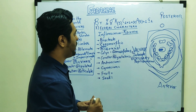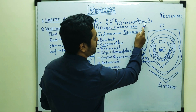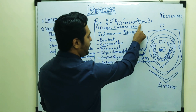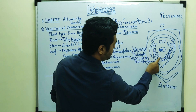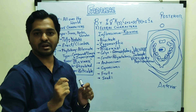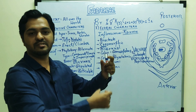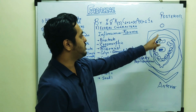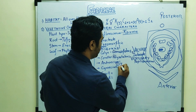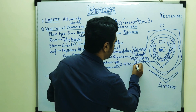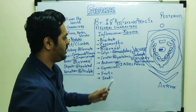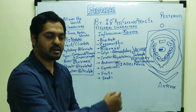Looking at the androecium, the arrangement is 9 + 1, meaning two combinations in which 9 stamens are fused together. These 9 stamens are fused with each other to form a single staminal tube — their filaments are fused — and 1 stamen is free and separated. This condition is called Diadelphous androecium. So in pea plant or beans, the diadelphous condition with 9 + 1 arrangement is present: 9 are fused and one stamen is completely free.